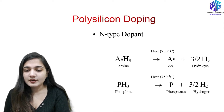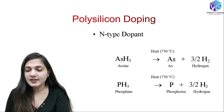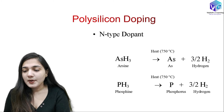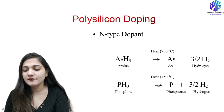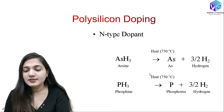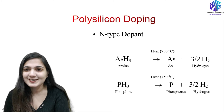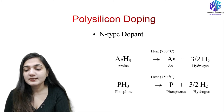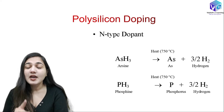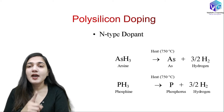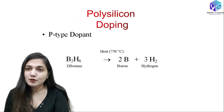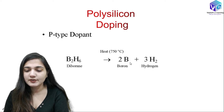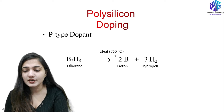For polysilicon doping — for N-type, arsine and phosphine are used. Arsine dissociates to give arsenic plus 3/2 hydrogen; this provides the required dopant concentration of arsenic. Phosphine dissociates to form phosphorus and 3/2 H2 — the gaseous hydrogen goes away from the substrate. For P-type dopant, diborane is used, which dissociates at high temperature to form boron and hydrogen gas at 750 degree Celsius.